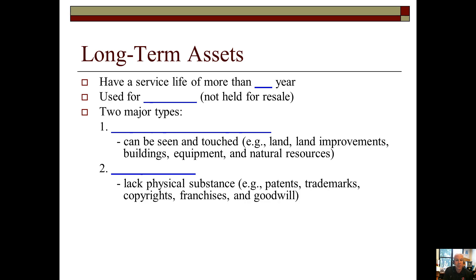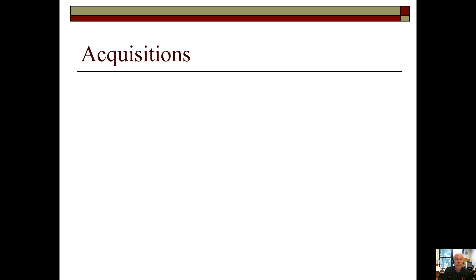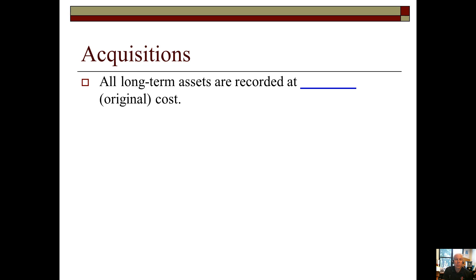Long-term assets have a service life of more than one year, are used for operations, and are not held for resale. There are two major types. First is property, plant, and equipment — PP&E — which can be seen and touched; examples include land, land improvements, buildings, equipment, machinery, and natural resources. Second are intangible assets, which lack physical substance, such as patents, trademarks, copyrights, franchises, goodwill, and trade names.